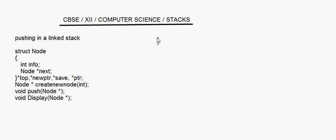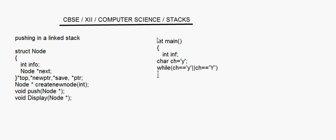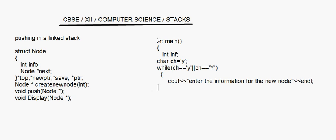In the main method, we take one int inf and for the loop we take char ch equal to 'y'. The while loop runs while ch equals 'y' or 'Y'. Inside, we cout to enter the information for the new node, read it with cin into inf, and then set new_ptr equal to create_new_node(inf).